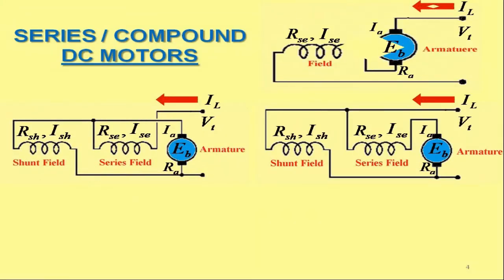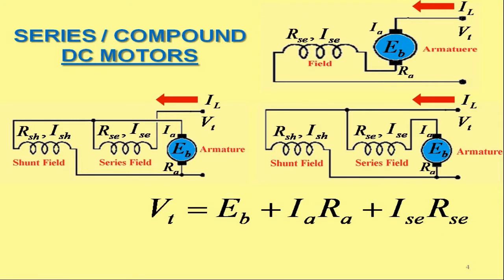Now, consider the cases of series excited as well as short shunt and long shunt compound DC motors. For these three motors, the current-voltage relationship can be expressed as Vt equals Eb plus Ia Ra plus Ise Rse. Rearranging this equation, we have Vt minus Ise Rse equals Eb plus Ia Ra.